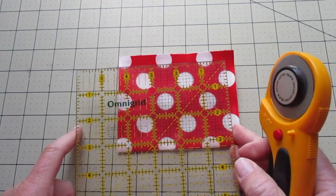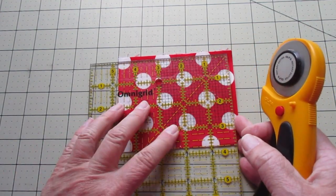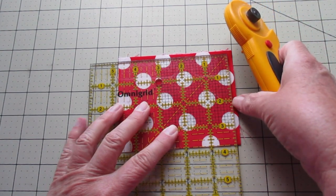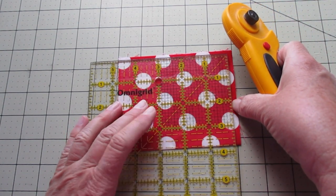With it still folded, now we need to trim it down. We're going to cut it so it measures four and a half inches across and three and three-fourths inches tall.